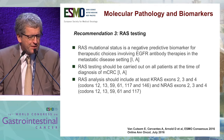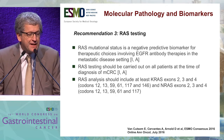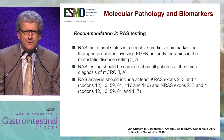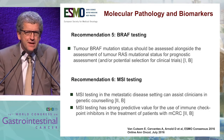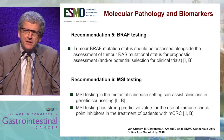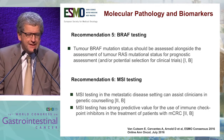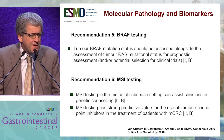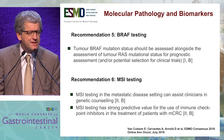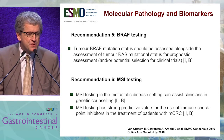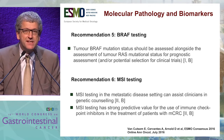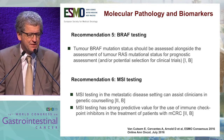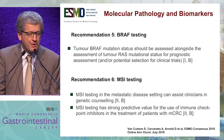RAS analysis should include at least KRAS exons 2, 3, 4 and NRAS exons 2, 3, 4 with the respective codons. Regarding other molecular tests, tumor BRAF mutation status should be assessed alongside RAS mutational status for prognostic purposes and for potential selection for clinical trials.